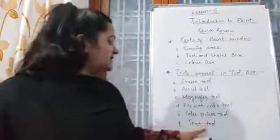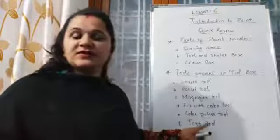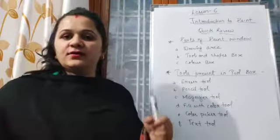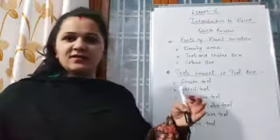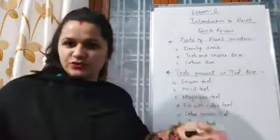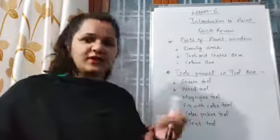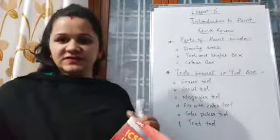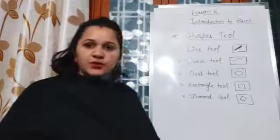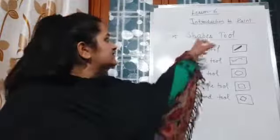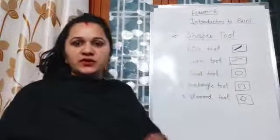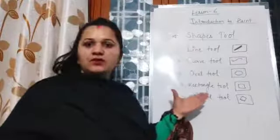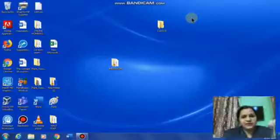The text tool helps us to write on the drawing area. With the help of the text tool we can give a caption or a heading to our drawing. Now we will continue with the next topic, which is the shapes tool, and we will learn some shapes given in your book.